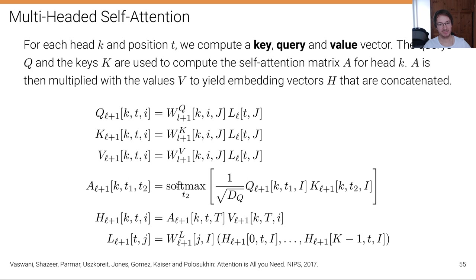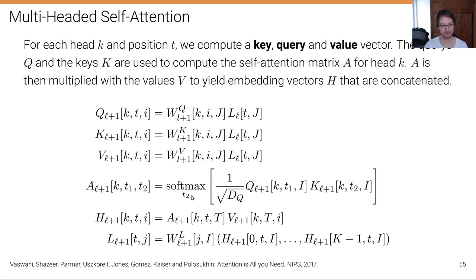We then multiply the query and the key — if they are similar, this leads to a strong activation of the attention matrix A. There's a normalization factor as well. We do a softmax over t2, computing the t1-attends-to-t2 relationship for head k. This is a vector multiplication over all elements of the query and key vectors, followed by softmax to normalize. Then we have the attention matrix A, which we multiply with the value vector V, summing over the t2 dimension of A.